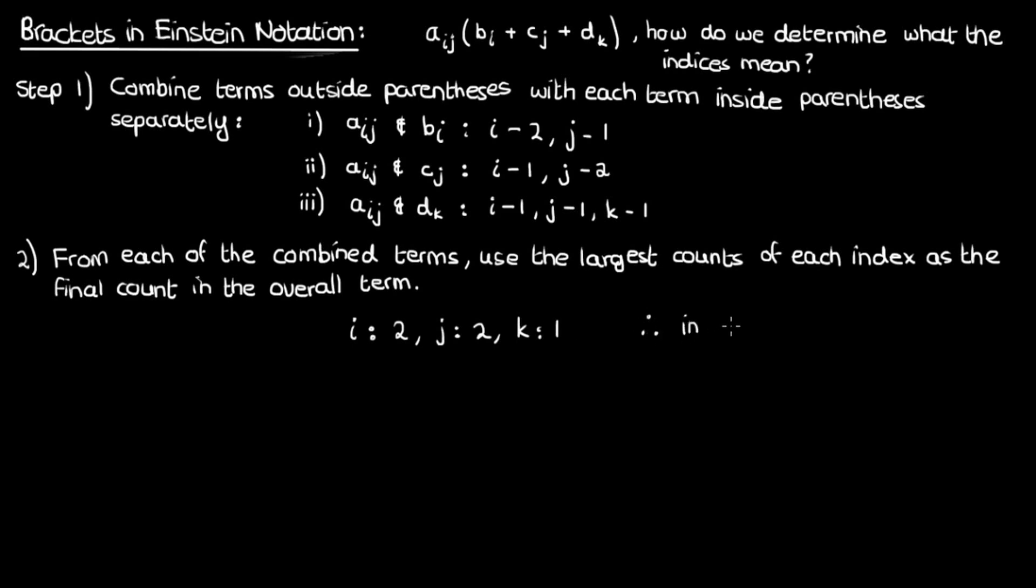Well, it means that in the overall term aij times bi plus cj plus dk, i and j are both dummy indices since their overall count is 2 from our analysis, while k is a free index since its overall count is 1.